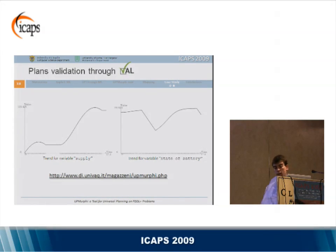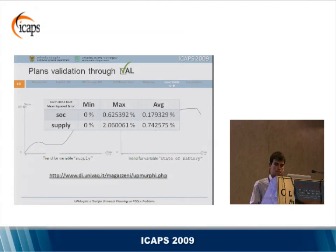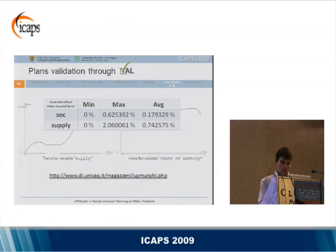To validate the discretization we used, we applied the validator VAL, which validated our solution. VAL also provides very useful features — for example, graphs showing the nonlinearity of the continuous variables involved in our problem. Moreover, to estimate the error derived from the discretization, we compared the values obtained during validation by VAL, which is very precise, with the values obtained during our synthesis, and found that the average error is quite small. This proves that the discretization we chose is good.